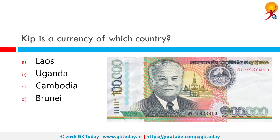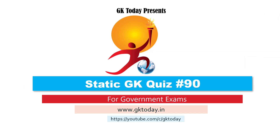Kip is the currency of which country? Kip is the currency of Laos since 1952. Historically, one kip was divided into 100 at. One Indian rupee is roughly 123 kip. That's all for today's quiz. Until the next video, goodbye.